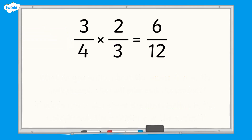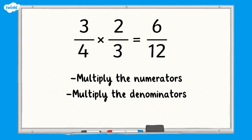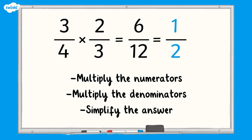So, when we multiply fractions, we can multiply the numerators to find the numerator, and then multiply the denominators to find the denominator. Finally, we need to check if we can simplify our answer. Six twelfths can be simplified to one half, so three quarters multiplied by two thirds equals one half.